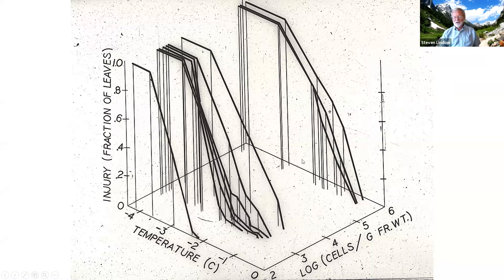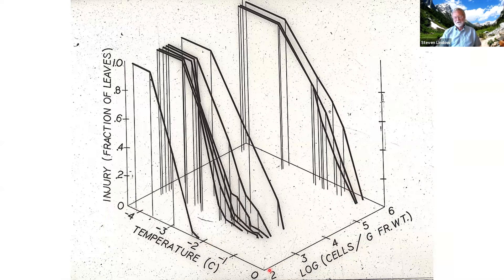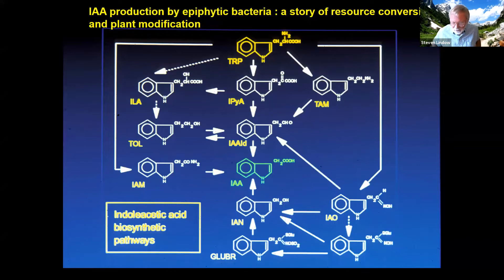This three-dimensional relationship from one of our plots shows frost injury versus temperature versus ice-nucleating bacteria numbers. As you get colder, you always see more freezing damage. But if you have high numbers of bacteria, you get a lot of frost damage even at a warm temperature like minus 2°C, around 28°F. Whereas plants with relatively low bacterial numbers from our treatments didn't see the same damage until it was four or five degrees Fahrenheit colder. These bacteria are very important in terms of freezing.